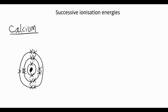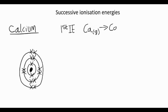And this is called successive ionization energies. We successively remove electrons, starting with the outermost electron first, and take them away one by one. So for the first ionization energy, it's the energy required to remove the first and highest energy electron from a calcium atom in the gas state. So we write calcium gas becomes a calcium plus ion, also in the gas state, plus a free electron.